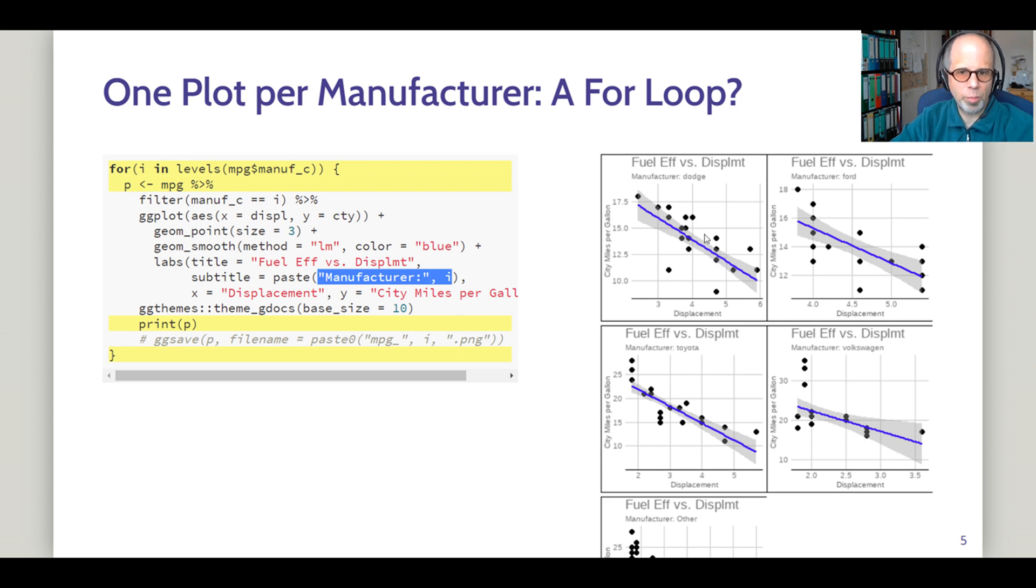Note that when you use ggplot inside a for loop you need an explicit print statement to actually show the plots. So here I assign the plots to an object called p and then I explicitly print that object to actually see the plots. And I can use that object p also to save the plots using ggsave. I commented this line out but the code works. Create a unique file name using the loop iterator and of course maybe a prefix for the plots and a file ending.